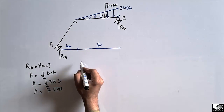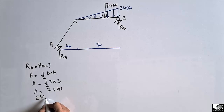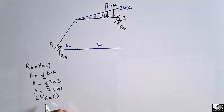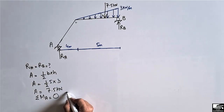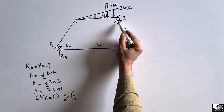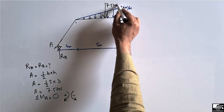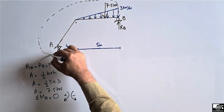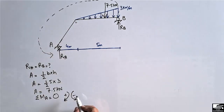The next step is to use the summation of moments equation. We take the sum of moments at point A equal to zero. We assume clockwise moment as positive and anti-clockwise moment as negative. R_B acts in the upward direction, creating an anti-clockwise moment about point A, so it will be taken as negative.